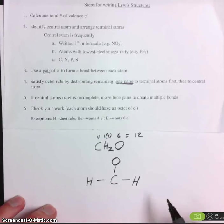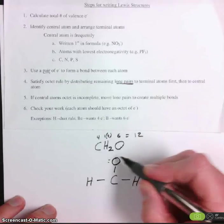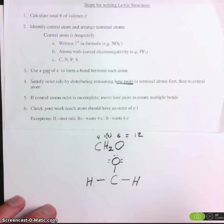Let's distribute them first to the terminal atoms. Two, four, six. Step number five, if central atom's octet is incomplete, move lone pairs to create multiple bonds.